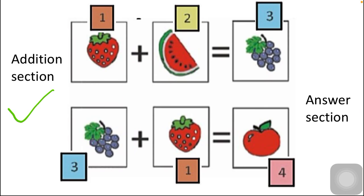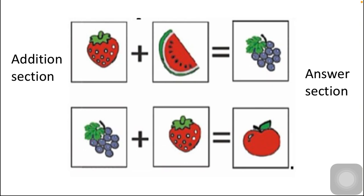We are using only one, two, three, and four. One and two are the smallest numbers, so they go on the addition side. Three and four are the bigger numbers and will appear as the answers. This confirms why we assign the smallest values to the addition side.